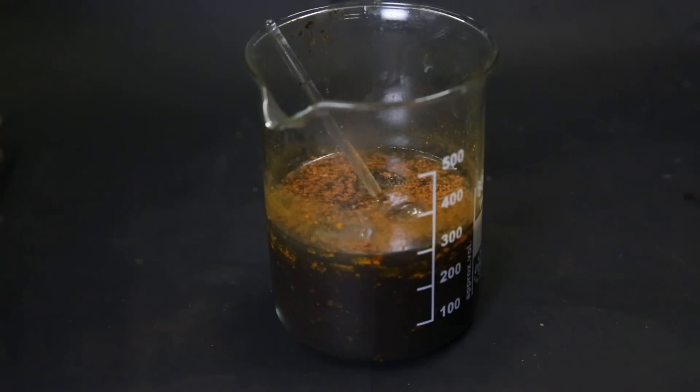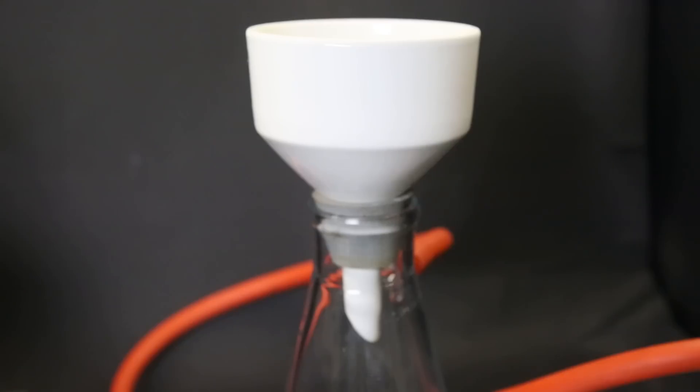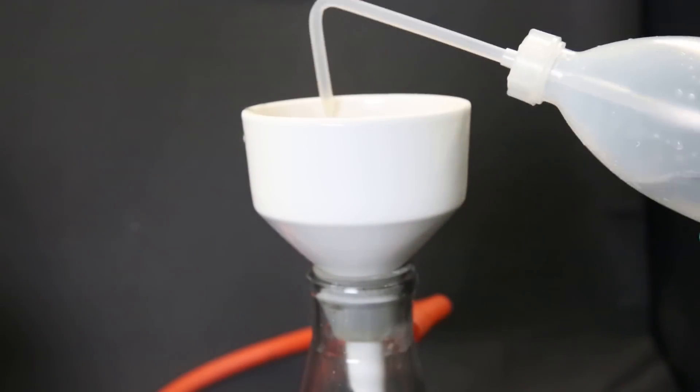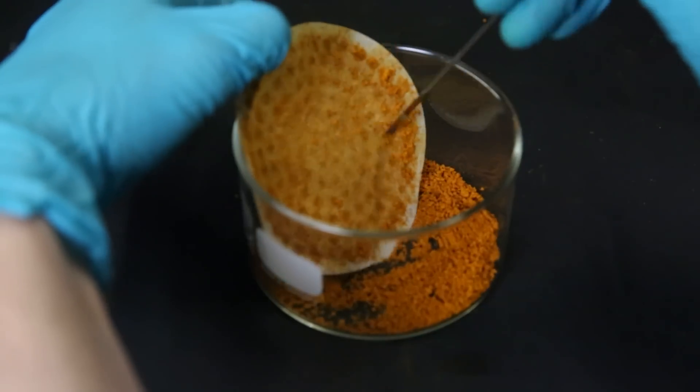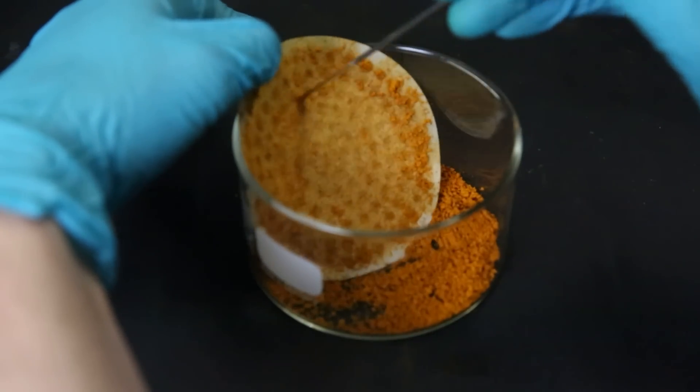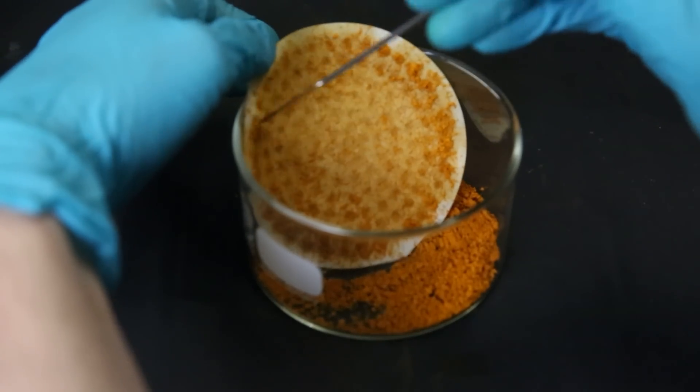Now the next step is to filter out the ferrocene, so I will simply use vacuum filtration. I wash the beaker a few times with some water and also wash the product on the filter with some more water. Afterward, I took out the filter with all of the ferrocene and scraped it all off into a crystallizing dish.